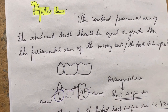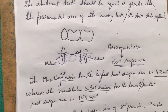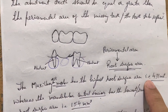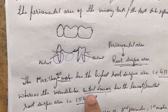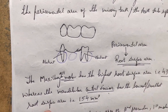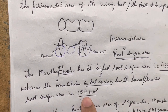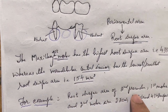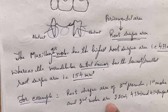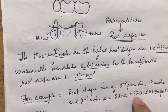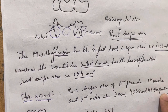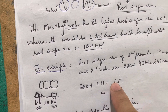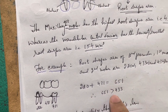The maxillary first molar has the highest root surface area, that is 433 mm², whereas the mandibular central incisor has the lowest root surface area, that is 154 mm². For example, consider the root surface area of second premolar, first molar, and second molar: 220, 433, and 431 mm² respectively. So 220 plus 431 equals 651, and 651 is greater than 433.